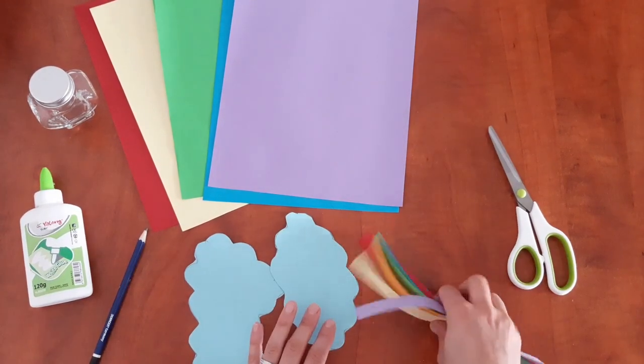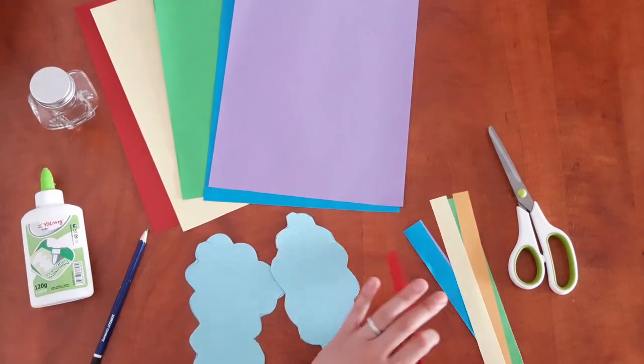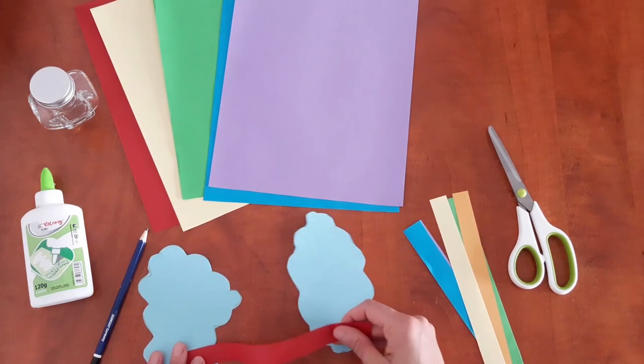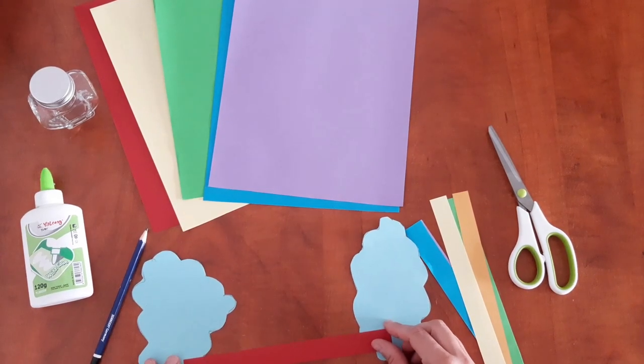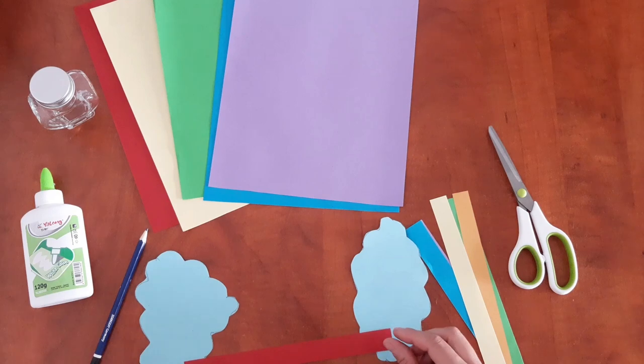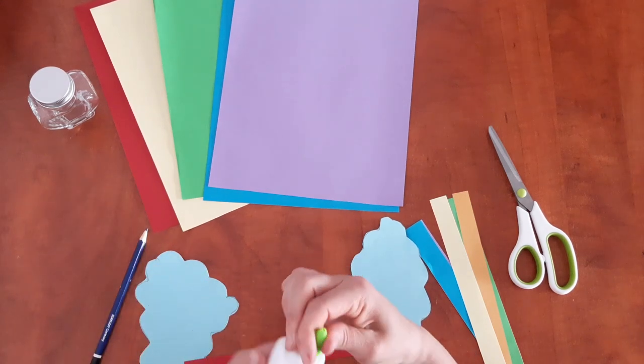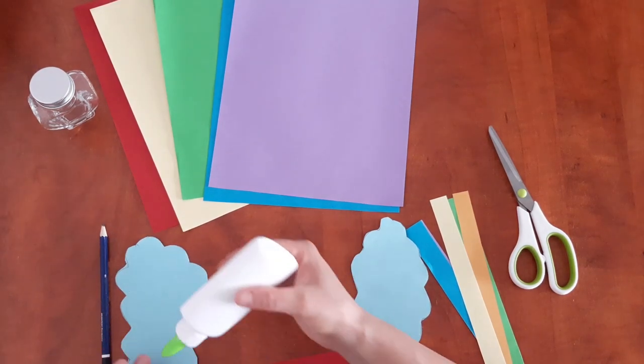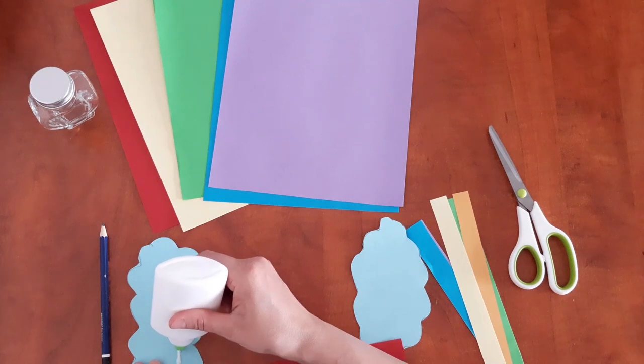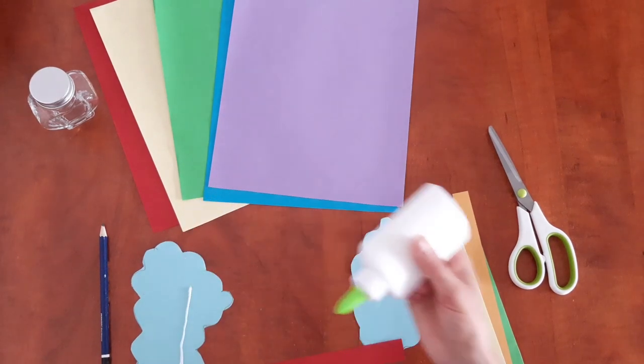Right now we are going to glue the edges of our strips to each cloud, like this: one edge on a cloud and the other edge on the other cloud. We are going to put some glue on each of our clouds.